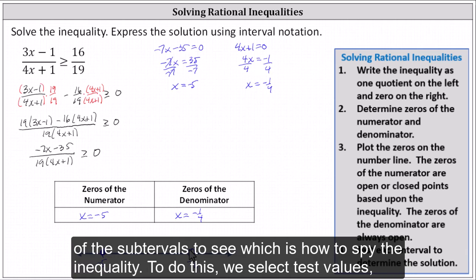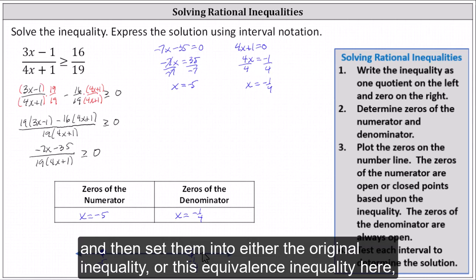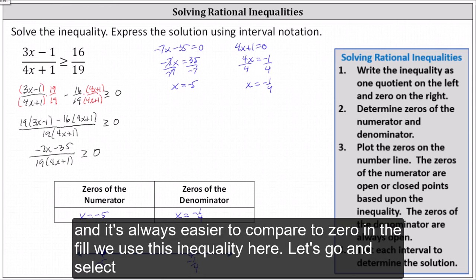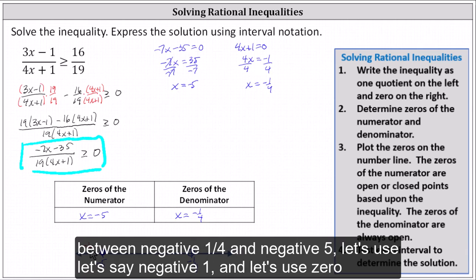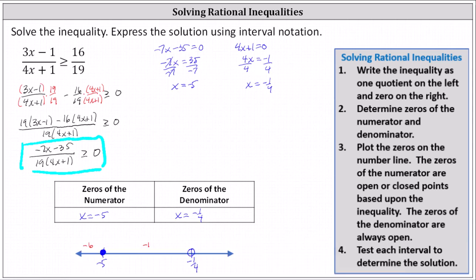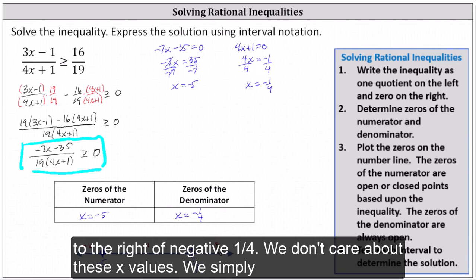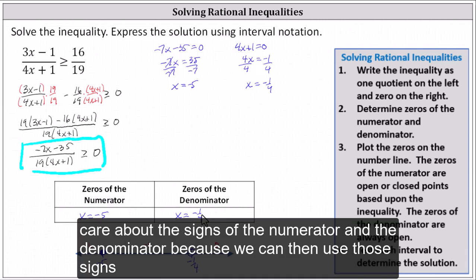For the last step, we need to test each of the subintervals to see which satisfy the inequality. We select test values and substitute them into the equivalent inequality compared to zero. To the left of negative five we'll use x = -6, between negative five and negative one fourth we'll use x = -1, and to the right of negative one fourth we'll use x = 0. We simply care about the signs of the numerator and denominator.